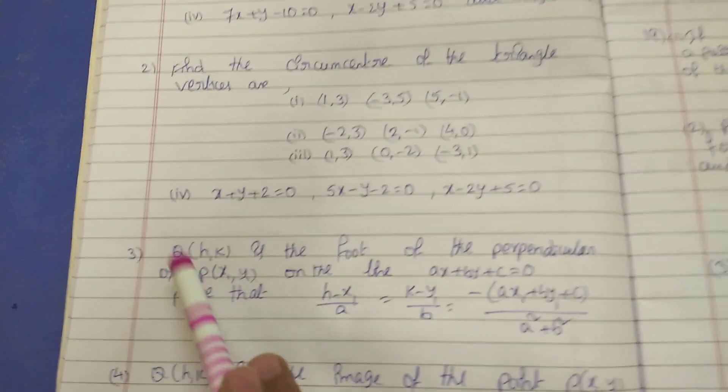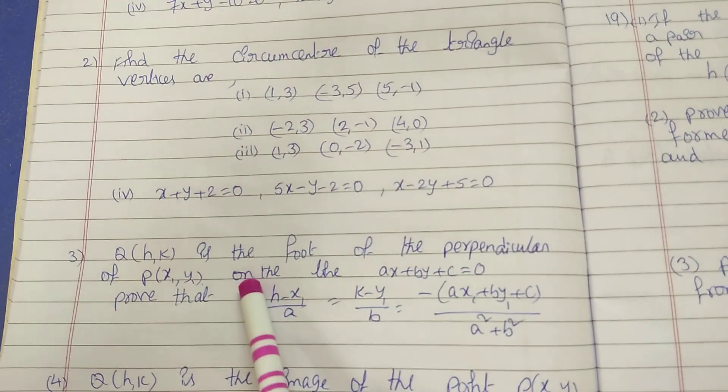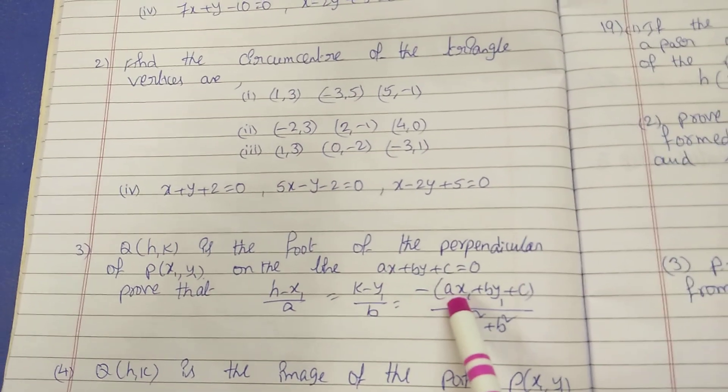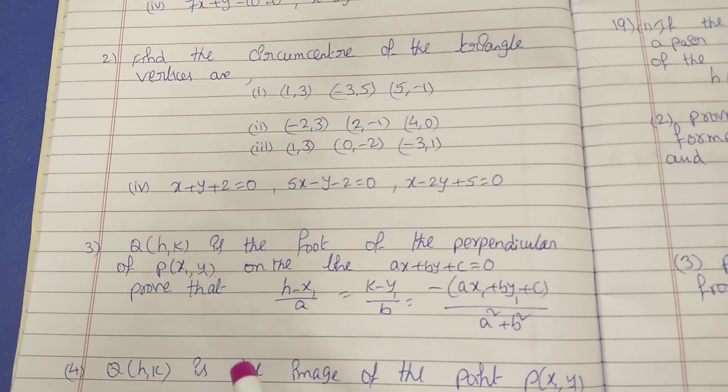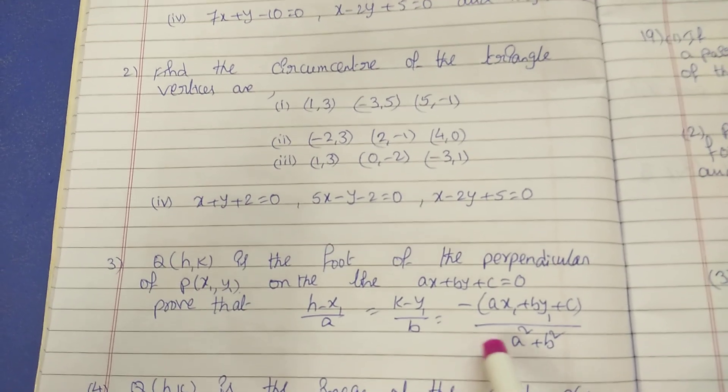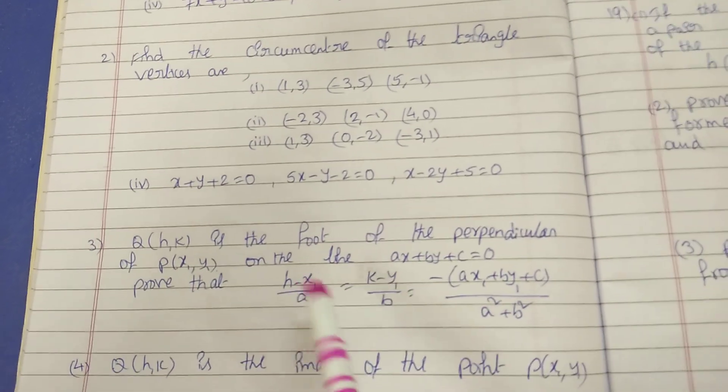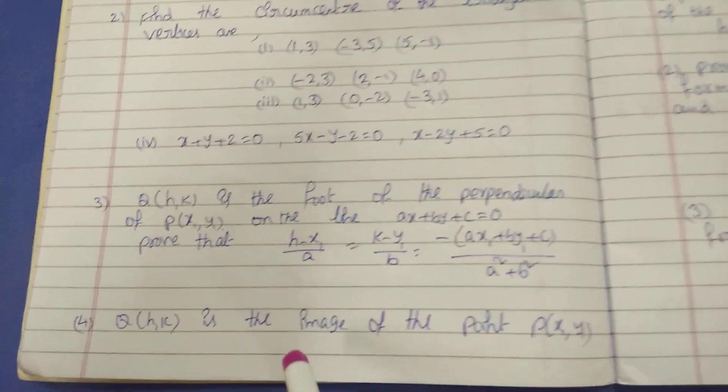And next bit, here Q of H, K is the foot of the perpendicular of P of X1, Y1 and the line AX plus BY plus C equal to 0. Prove that H minus X1 by A equal to K minus Y1 by B equal to minus of this there. And this is the foot of the perpendicular theorem. This one also you have to prepare.